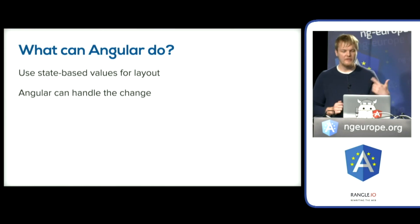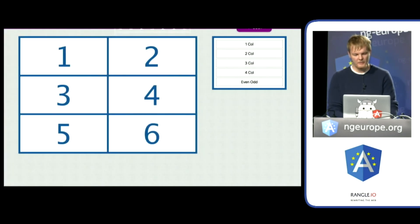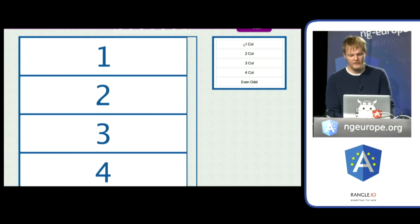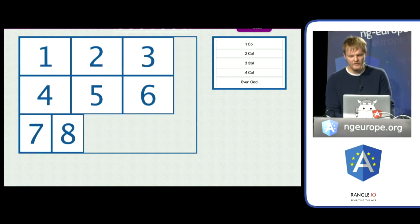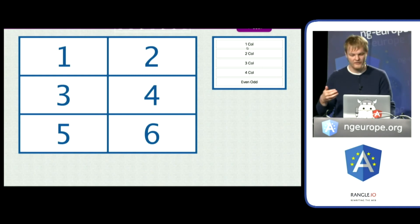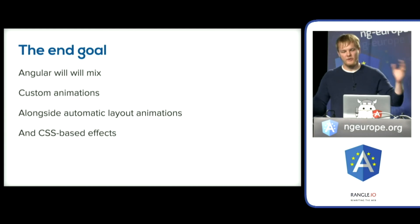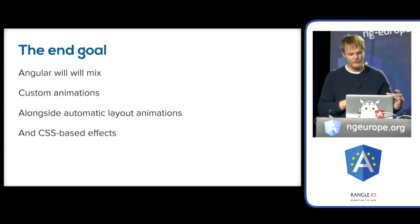What Angular can do is, if you use the state-based system of defining Angular hooks and specifying widths, heights, and so on, Angular can handle the change for you. In the last demo, using Angular's system of specifying column widths and heights, Angular handles the change automatically. The more the animation code base evolves, the more we can tap into layout changes automatically, because Angular has knowledge about this as soon as the bindings change. The end goal is that Angular will detect layout changes and animation changes and coalesce them into a combined player. Eventually, layout CSS transitions and keyframes will also be included in the player mix.